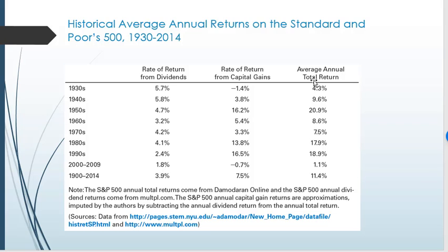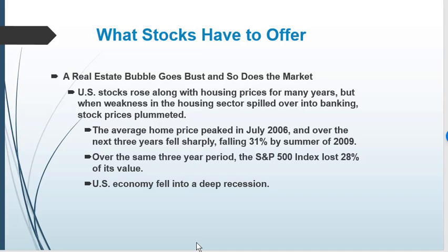Looking at average returns, you can see that almost any time frame you pick, there are generally no negative total returns. There's always some kind of a dividend return, and then there are also returns from capital gains — sometimes those are negative. There's a wider range of returns dependent on your holding period and how long you want to be invested in the stock market.